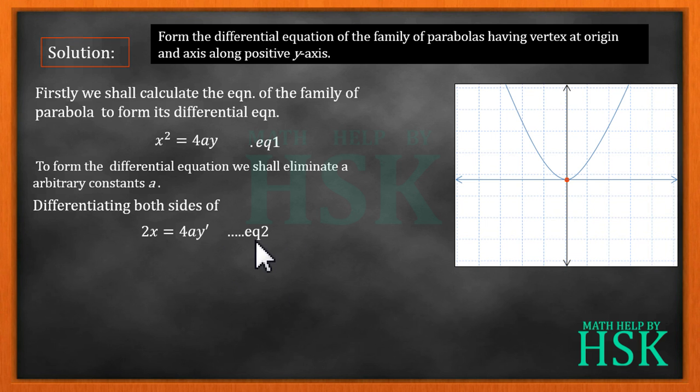Now I'm going to divide equation number two by equation number one. So I'm going to get 2x/x² and 4ay' divided by 4ay. This 4a cancels out, so I'm going to get 2/x = y'/y, or xy' = 2y.